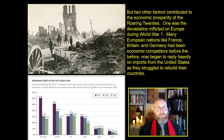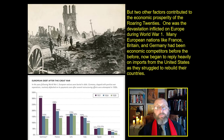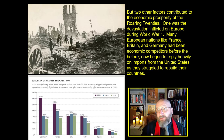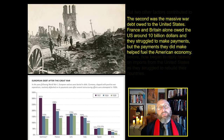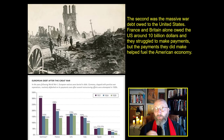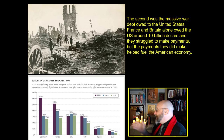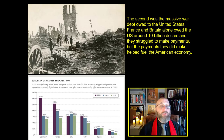Other factors also contributed to the economic prosperity of the Roaring Twenties. World War I had devastated Europe — France, Britain, and Germany had been economic competitors to the United States before the war, but now they relied heavily on imports from the U.S. as they struggled to rebuild. France and Britain alone owed the United States more than $10 billion, and that massive flow of cash from Europe into the United States helped fuel the American economy.